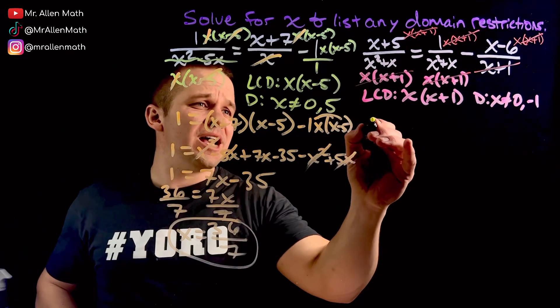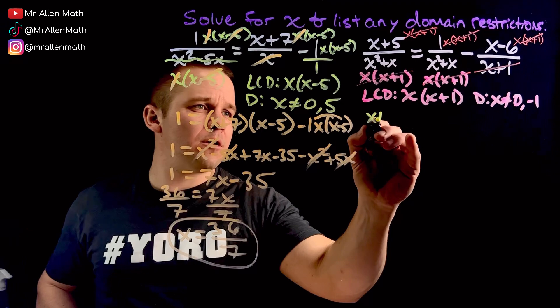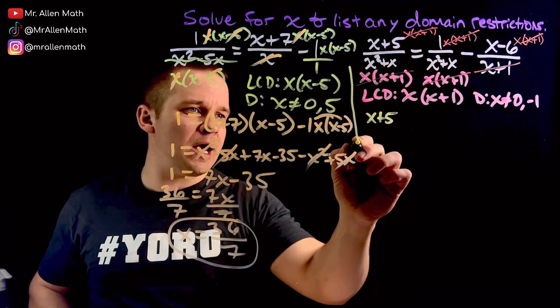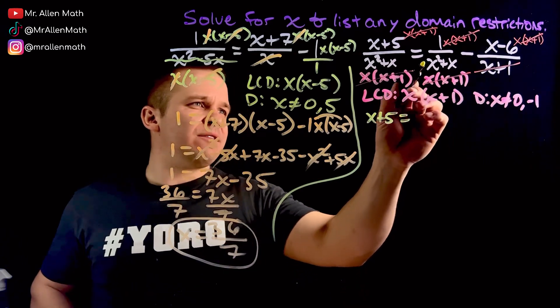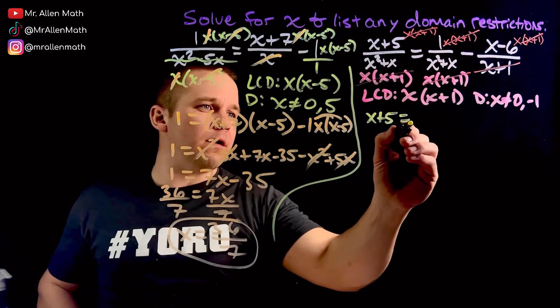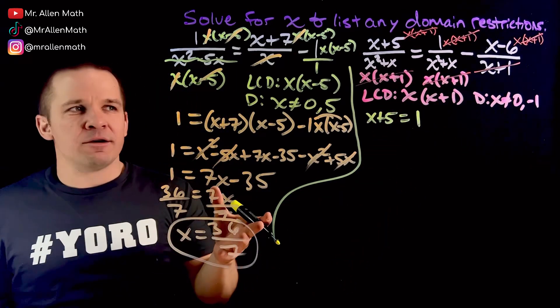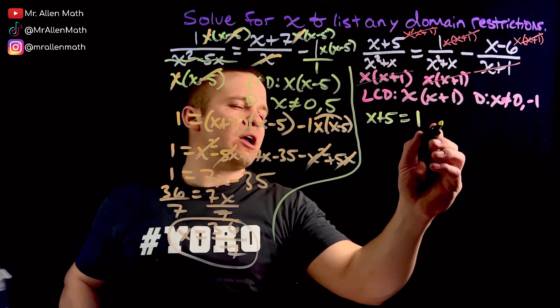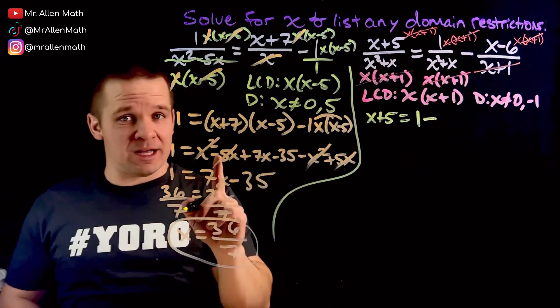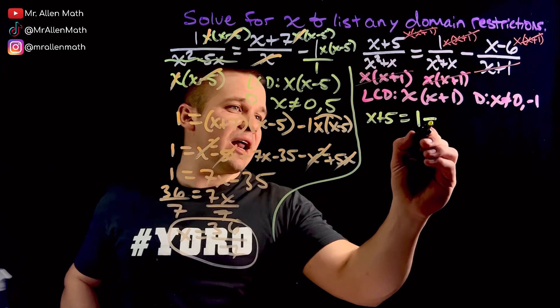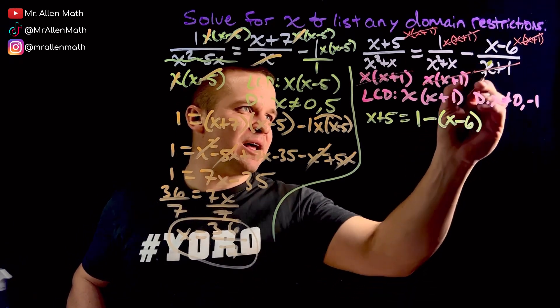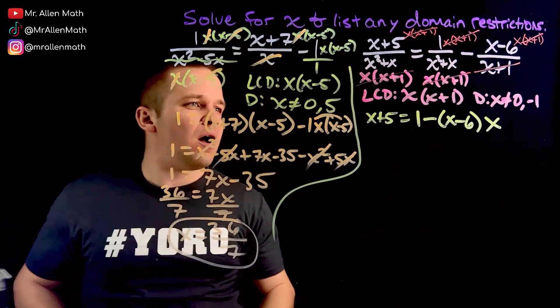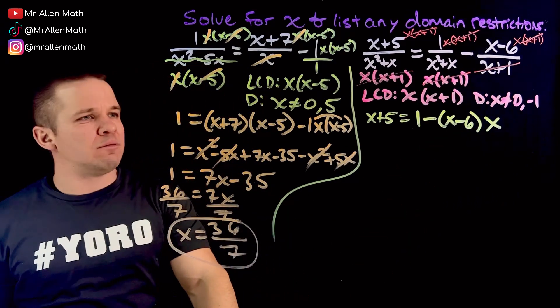So the first one here is just x plus 5. x plus 5. Let me draw a little line here. Keep them separated. Equals. And then I've got, let's see here. It's just going to be 1. That's cool. The entire denominator is gone. And then over here, I've got that negative. Don't forget that negative. And I've got x minus 6. x minus 6. And we've got that x that was left over. That's what we're dealing with there, guys. That's pretty awesome.